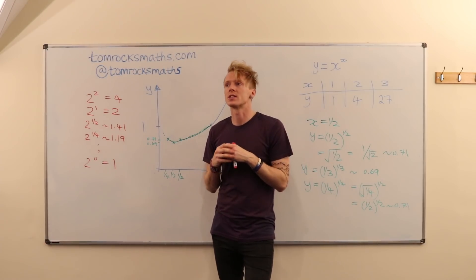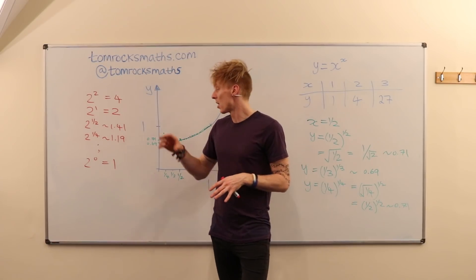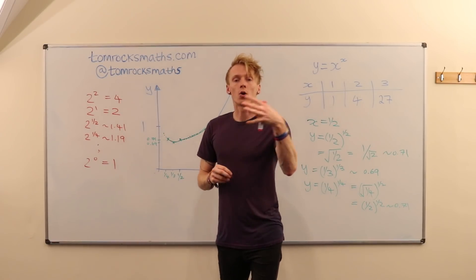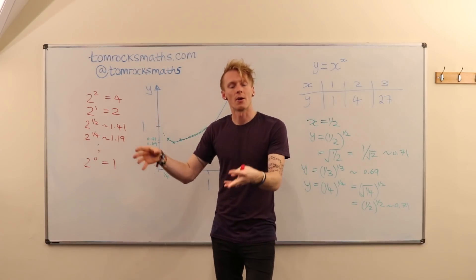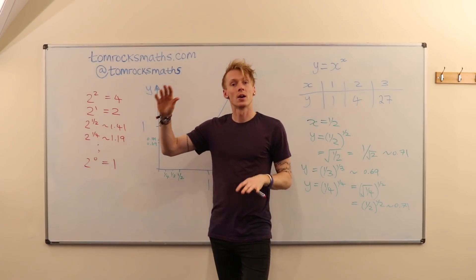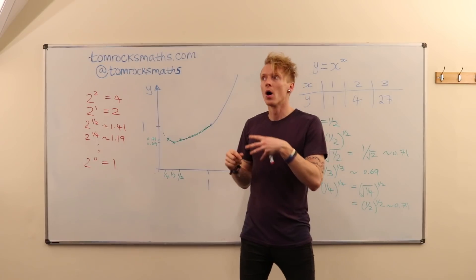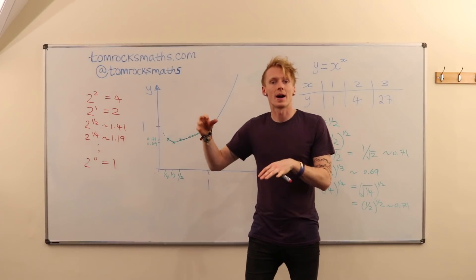You could go even smaller, maybe you could take a half to the power 0. Again, you would get 1. You could even take a quarter to the power 0, you would get 1. Maybe even 1 divided by a million to the power 0, you get 1.